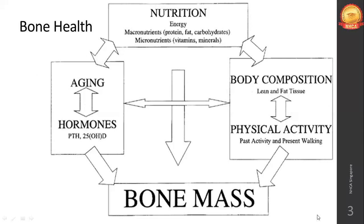Once body composition and physical activity are known, and if you are adequately taking calories and macro- and micronutrients according to your body composition, your bone mass will remain pretty much the same. But if there is any negative aspect in this equation, your bone mass is also affected. Apart from that — the nutrient part — aging population and hormonal imbalances, specifically parathyroid hormone and 25-OHD (the derivative of vitamin D, which acts like a hormone in the body), also play an important role.